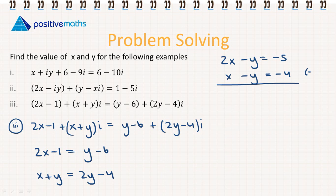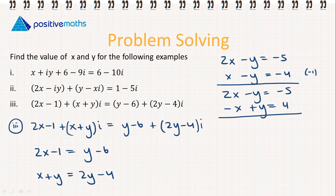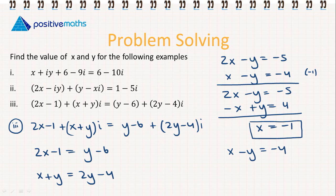We solve simultaneously. Multiplying the bottom equation by minus 1 gives minus x plus y equals 4. Adding to the top equation, the y's cancel: 2x minus x gives x, and minus 5 plus 4 gives minus 1, so x equals minus 1. Using the second equation: minus 1 minus y equals minus 4, so minus y equals minus 3, therefore y equals 3.